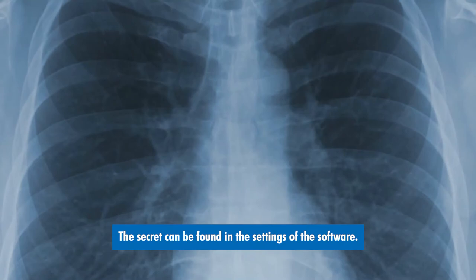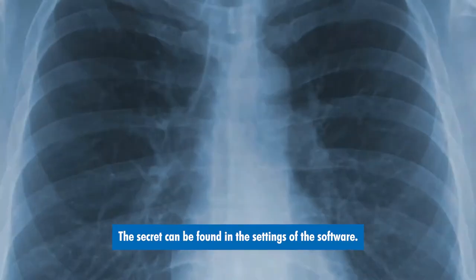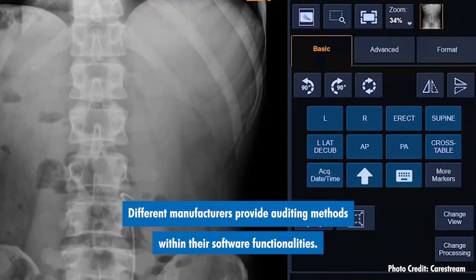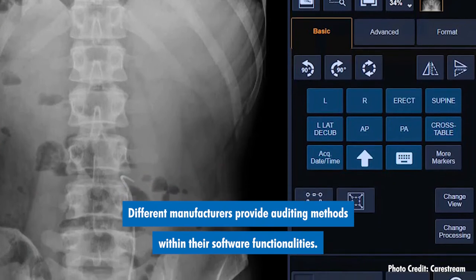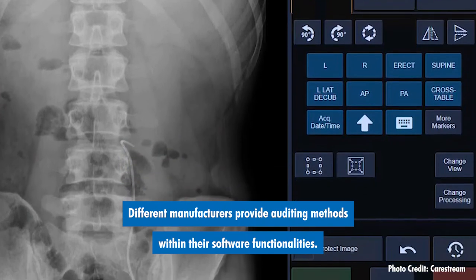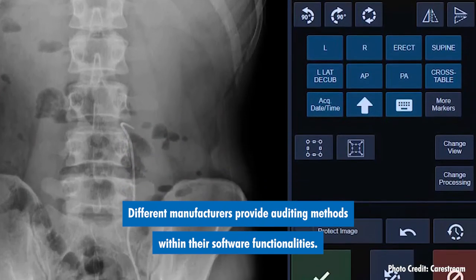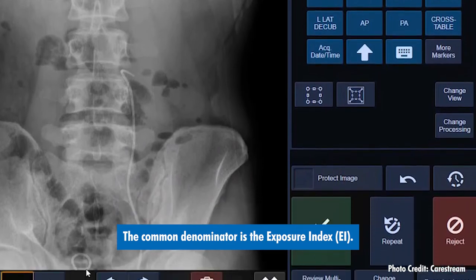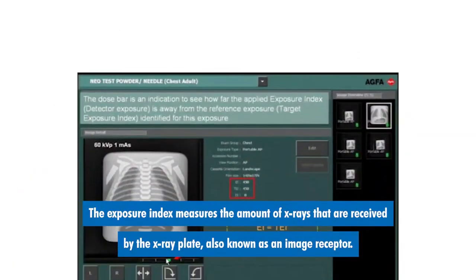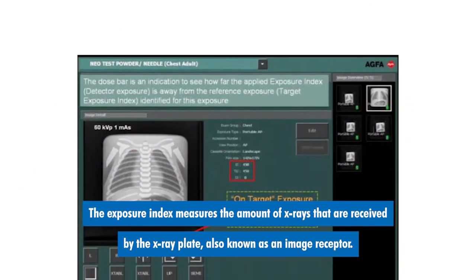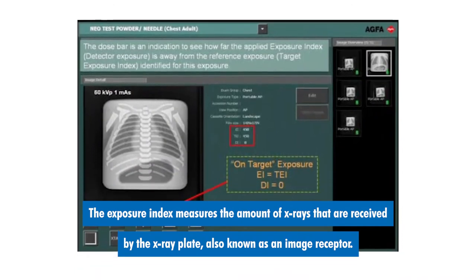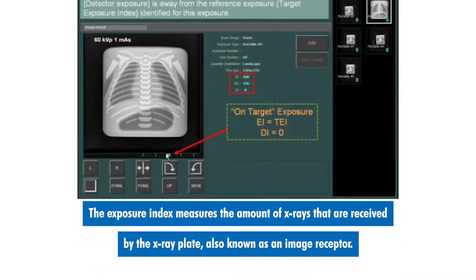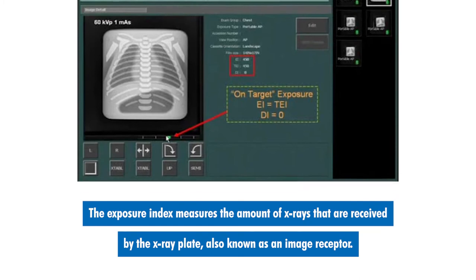The secret can be found in the settings of the software. Different manufacturers provide auditing methods within their software functionalities. The common denominator is the exposure index. The exposure index measures the amount of x-rays that are received by the x-ray plate, also known as an image receptor.